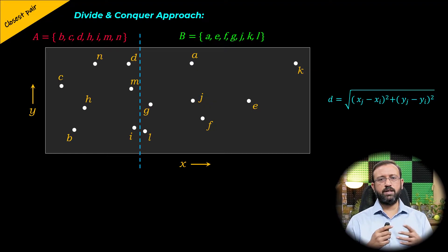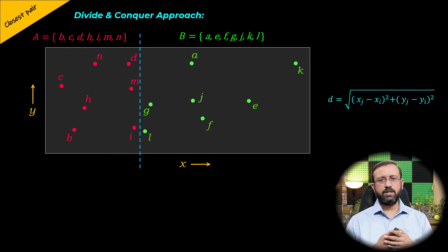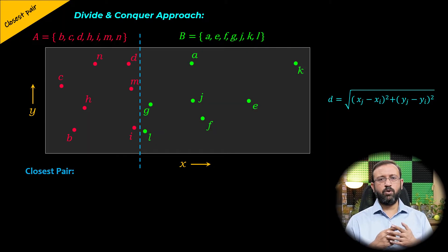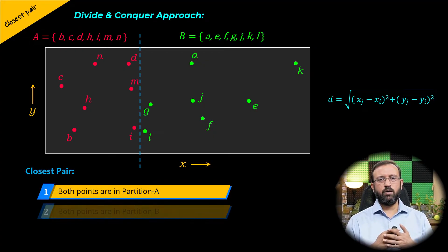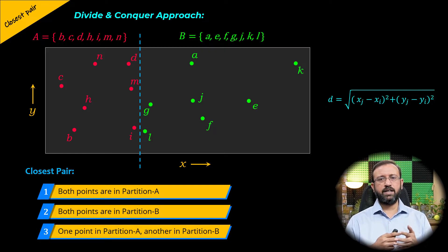If some points lie on the median, we divide them suitably so both partitions have roughly equal numbers of points. In this case, points B, C, D, H, I, M, and N are in partition A, and points A, E, F, G, K, and L are in partition B. The closest pair of points falls into three categories: both points are in partition A, both points are in partition B, or one point is in partition A and the other in partition B.